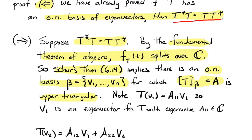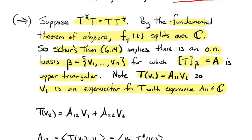Since the matrix is upper triangular, in its first column the only non-zero entry is in the first row. The first column gives the coefficients of the image of the first basis vector V1. So V1 must be an eigenvector — A₁₁ is the only non-zero entry in that column. So V1 is an eigenvector for T with eigenvalue A₁₁.